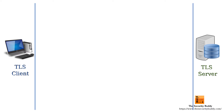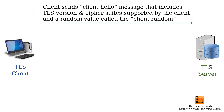In the TLS handshake, the client first sends a Client Hello message to the server. This Client Hello message includes the TLS version and the cipher suites supported by the client. The message also includes a string of random bytes called the client random.